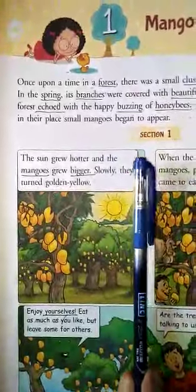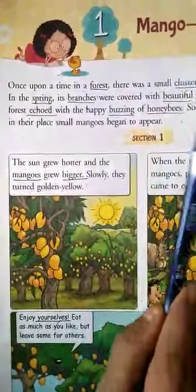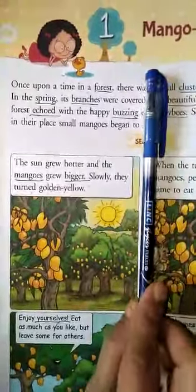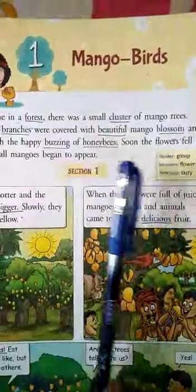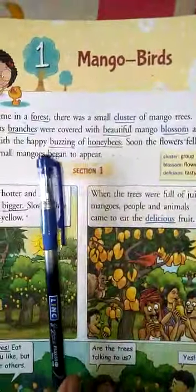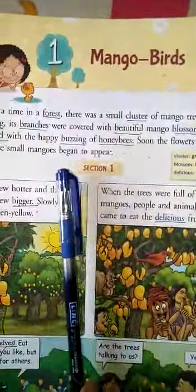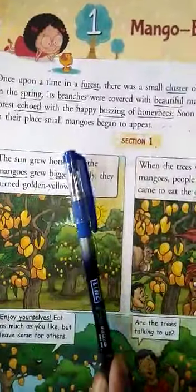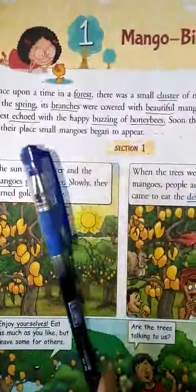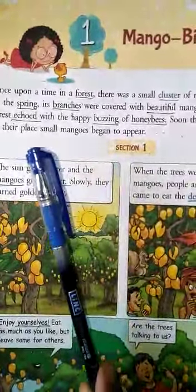The story is about mangoes — how mangoes became birds. There was a forest and in that forest, many mango trees were there. All the people and the animals loved to eat the mangoes and they generally came there to have the tasty and juicy mangoes.